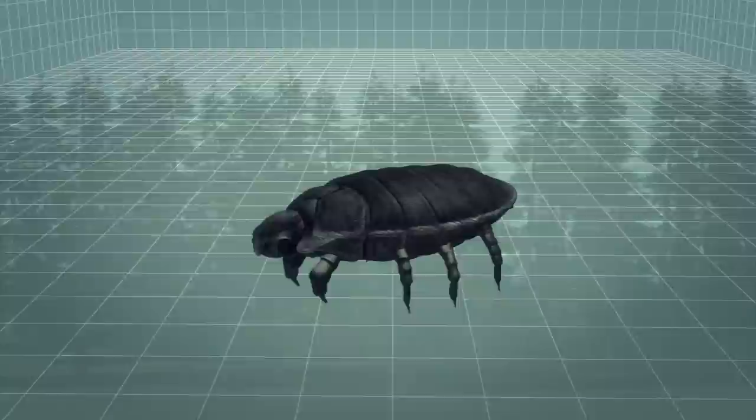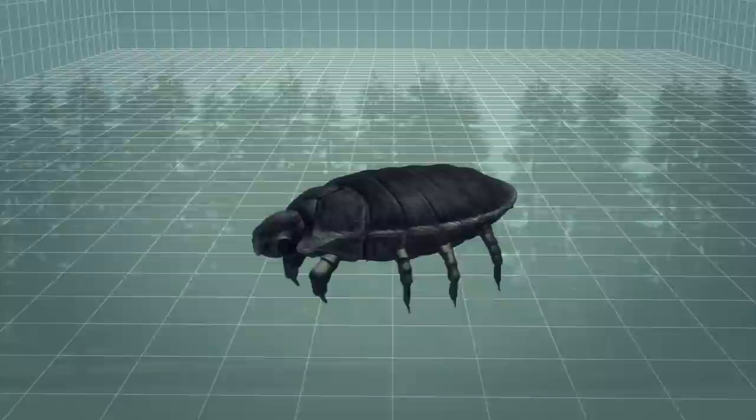It reached American soil from Europe in 1900. Infested trees bend and their leaves turn yellow. The most obvious symptom is the white woolly balls that dot the needles of infested trees.